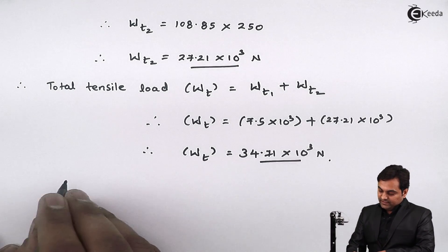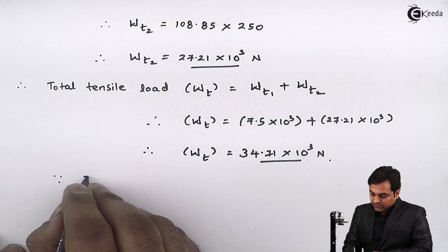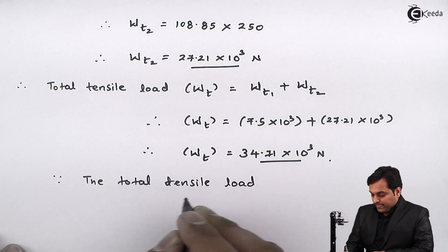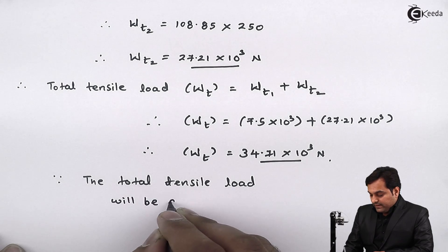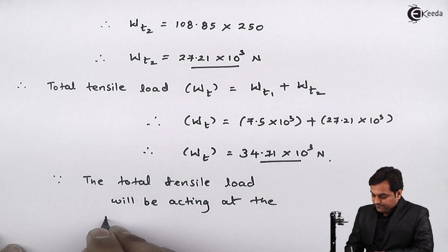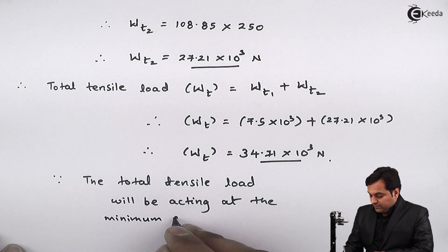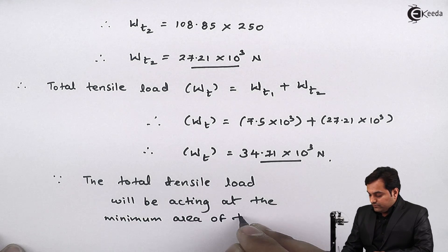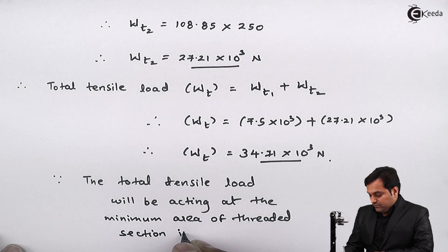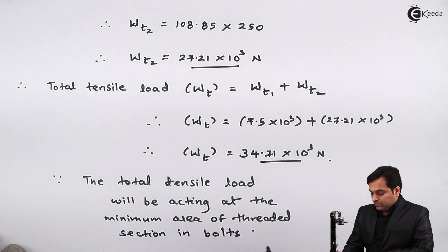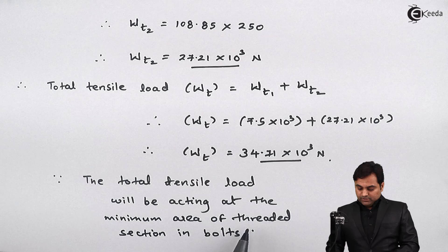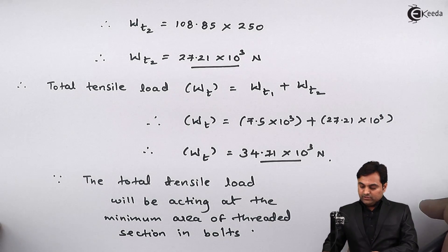After getting the total tensile load, we note that this load acts at the minimum area of the threaded section in the bolt. Since the total tensile load acts at the minimum area — which is the core area in the threaded section — we can now apply the stress equation. The threaded section is the weakest part of the bolt.